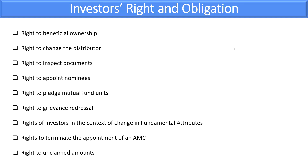All unit holders have the right to appoint nominees — they can appoint a maximum of three nominees. This is one of the favorite exam questions. Unit holders can also place mutual fund units as collateral — they have the right to pledge the mutual fund units to their financer if they want to take a loan against mutual funds.